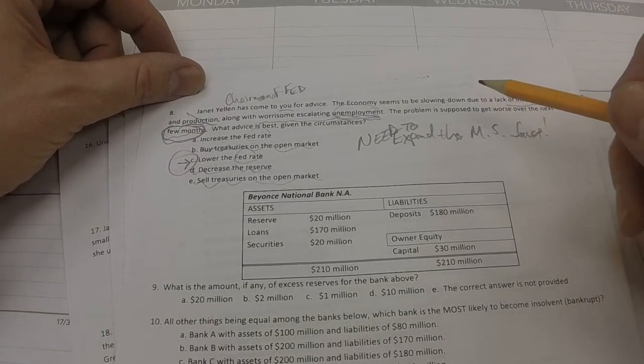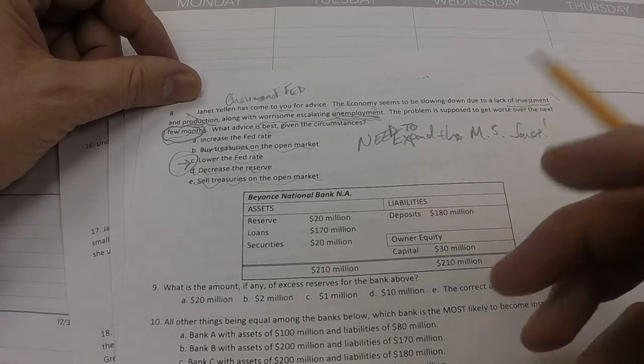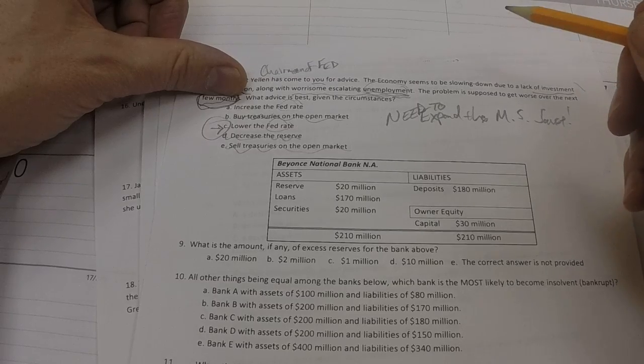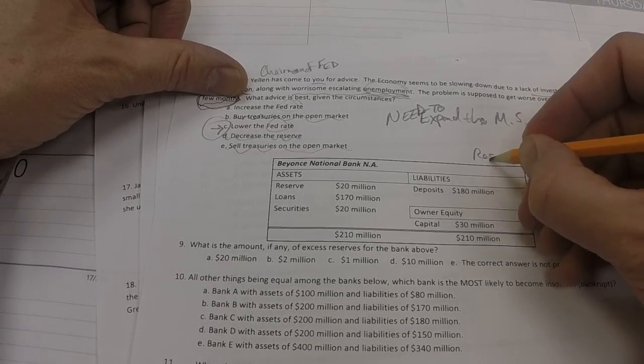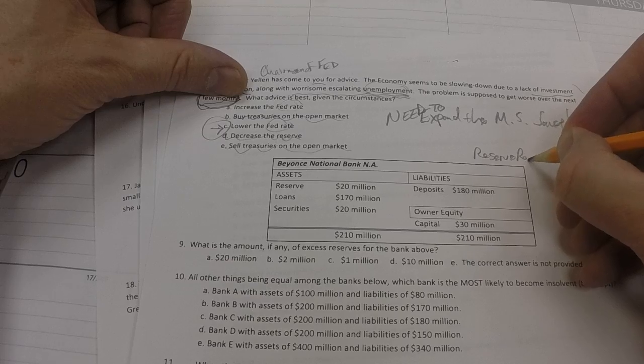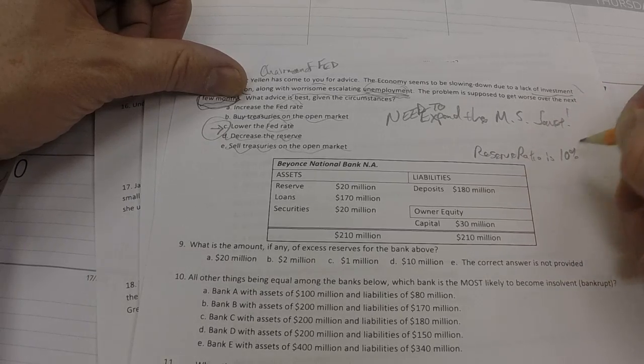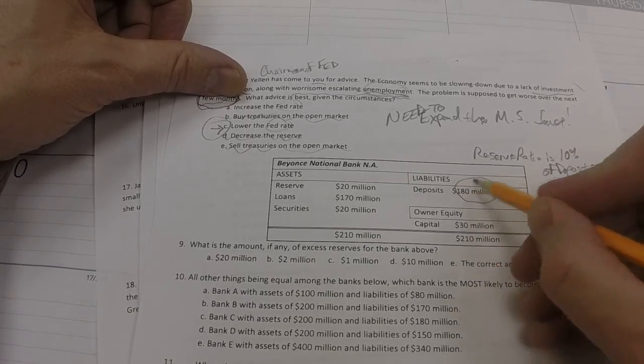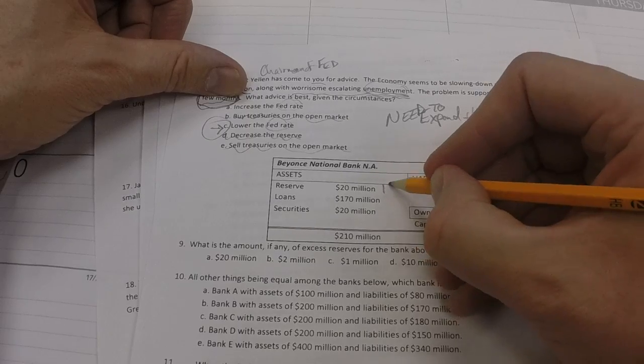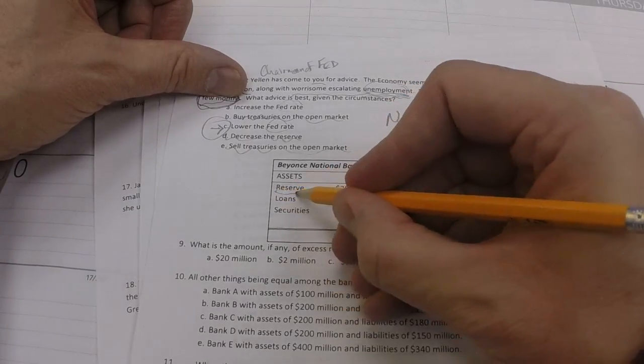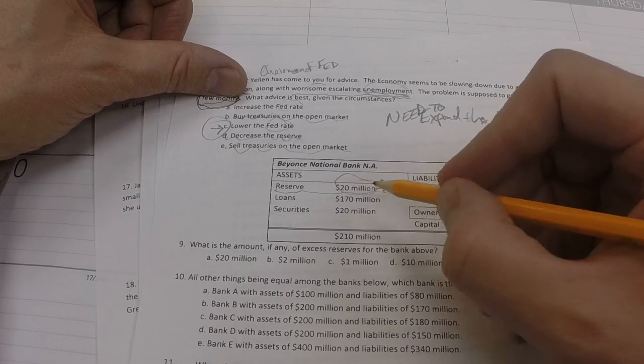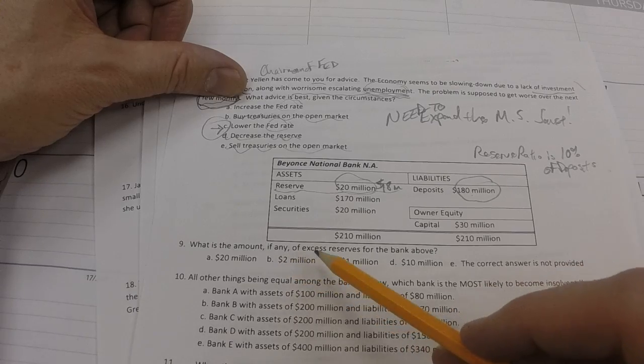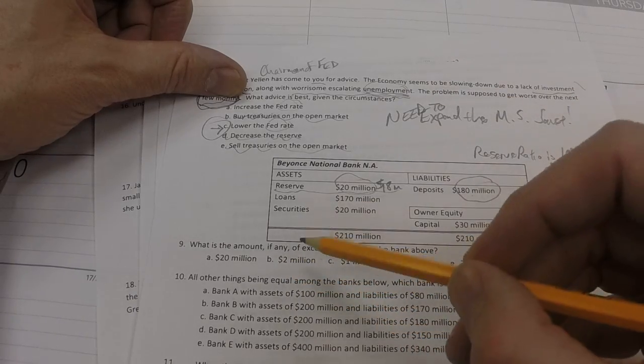All right, now if we go to this next question, this has to do with the bank balance sheet. And even though it looks like a complicated question, number nine, it's really quite simple. Remember that the reserve ratio is 10% of deposits. All right, since deposits are 180 million, the bank is supposed to be saving 18 million over here on reserve. They're actually holding 20 million in reserve, so that's 2 million more than you need to. Question nine, what is the amount, if any, of excess reserves for the bank above? Answer, 2 million.